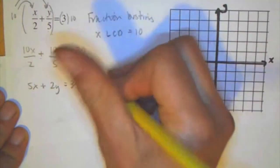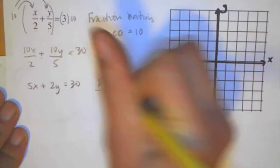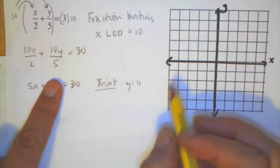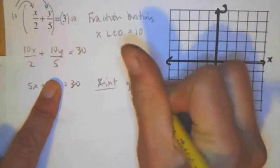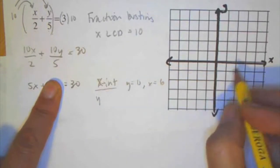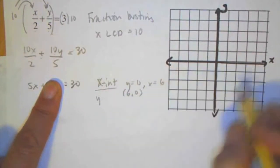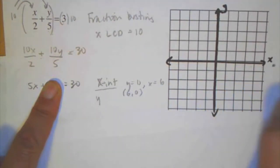From standard form, I can find the y-intercepts and the x-intercepts. To find the x-intercept, set y equal to 0. When y is equal to 0, 5 times what gives me 30? That would be x is 6. So that is the point 6, 0. 1, 2, 3, 4, 5, 6, 0.